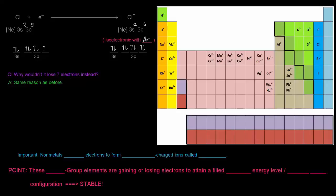The question is: why wouldn't it lose seven electrons instead? Well, it just wouldn't be stable to have all that charge. Basically the same reason as before.